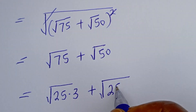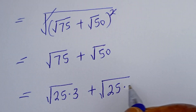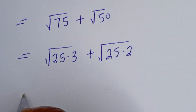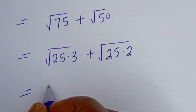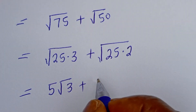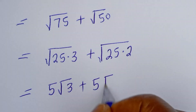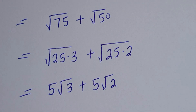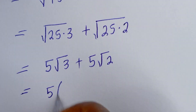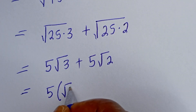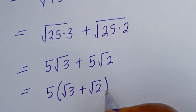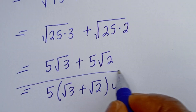That gives us 5 root 3 plus 5 root 2. You can see that 5 is common — let's bring it out. So this is equal to 5 bracket root 3 plus root 2. And this is the final answer.